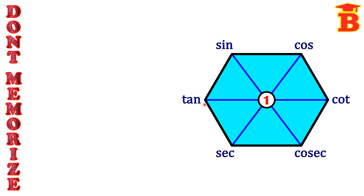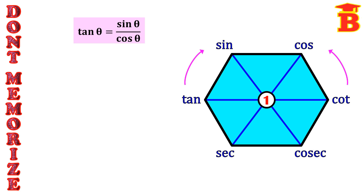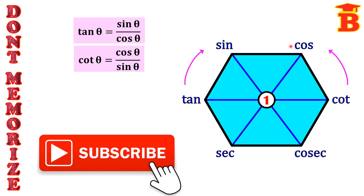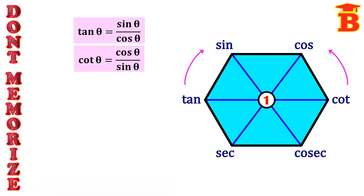Now from the tan vertex, taking clockwise, we get the formula tan θ = sin θ / cos θ. Similarly, from that vertex taking the anticlockwise direction, we get cot θ = cos θ / sin θ.